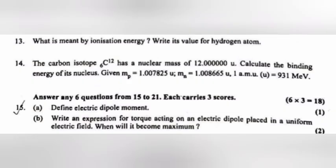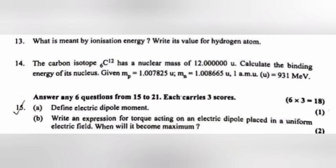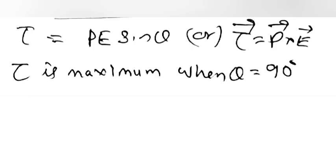Question 15: A) Define electric dipole moment. Answer: A dipole moment is the product of the magnitude of the charge and the distance between the centers of the positive and negative charges. P is equal to Q into 2A. B) Write an expression for torque acting on an electric dipole placed in a uniform electric field. When will it become maximum? Answer: Torque is equal to PE sin theta or torque is equal to P into E. Torque is maximum when theta is equal to 90 degree.